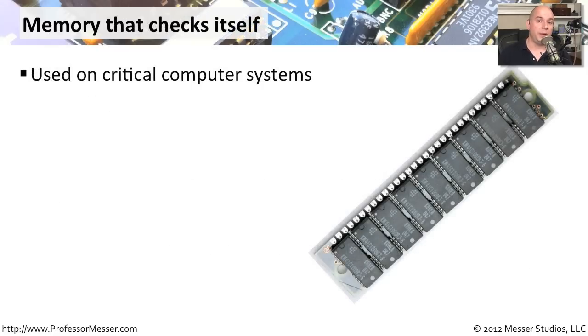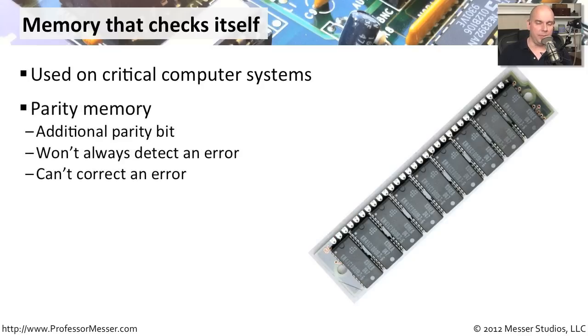Another type of memory you'll run into, especially in important systems like web servers or database servers, is memory that's able to check itself. One common type is parity memory, which has an additional parity bit on the memory module constantly checking communication. If anything doesn't match the parity, it will flag a message and stop communication so that error doesn't propagate to the rest of the system. It can't fix the problem, but it can stop the process.